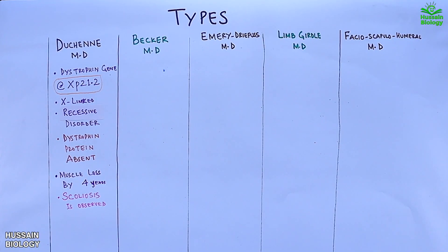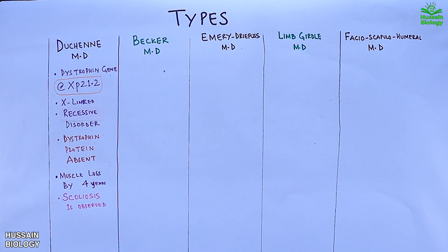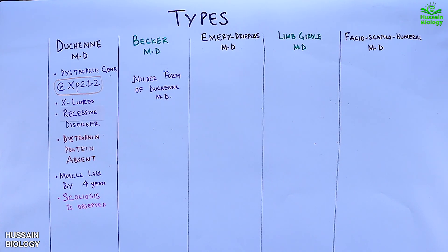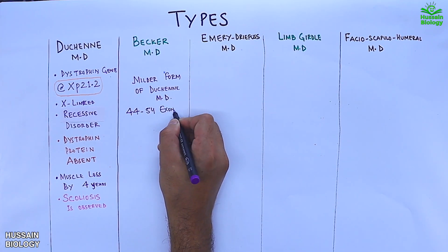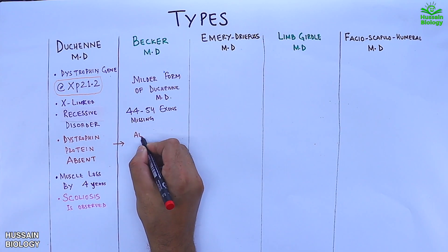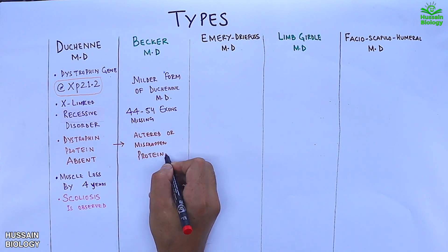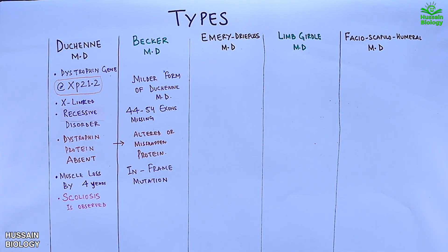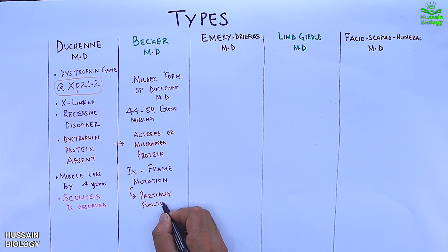Becker's muscular dystrophy is a milder form of DMD. The same set of muscles are affected as in Duchenne muscular dystrophy, but to a lower extent. There is a deletion of exons 44 to 54 among the 79 exons, resulting in a misshapen or altered protein. Because this is an in-frame mutation, it leads to transcription of a partially functional dystrophin protein.